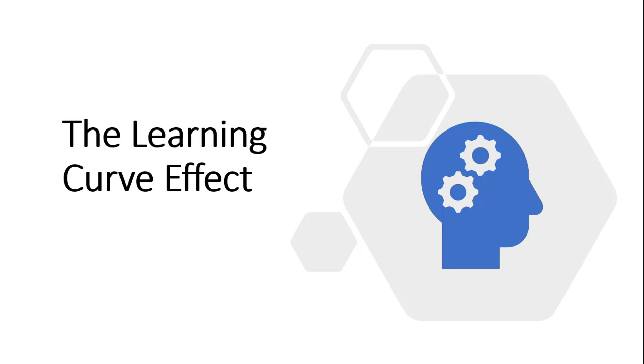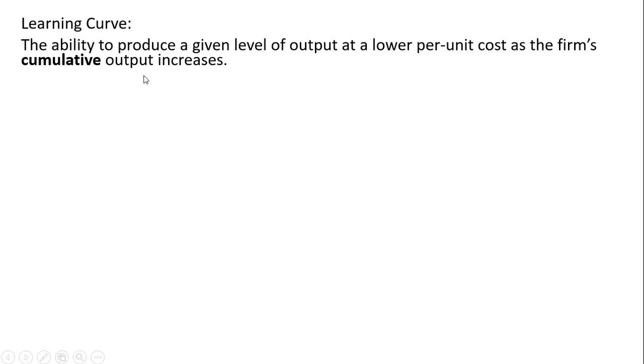Hello, in this video we're going to talk about the learning curve effect. The learning curve is the ability to produce a given level of output at a lower per-unit cost as the firm's cumulative output increases.